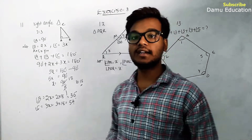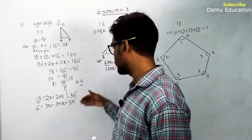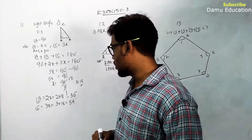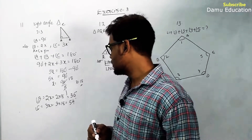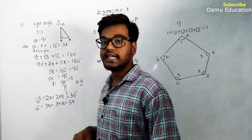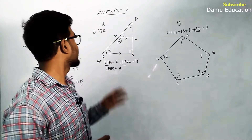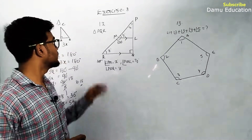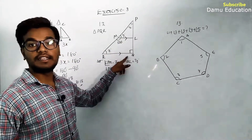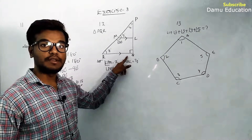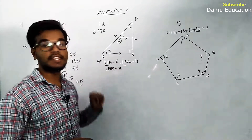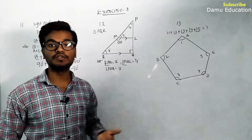Angle C equals 3x equals 3 into 18 equals 54 degrees. Adding 36 and 54 gives 90 degrees, plus the existing 90 degrees confirms the total. So the two acute angles of triangle ABC are 36 degrees and 54 degrees. Moving to the 12th question: triangle PQR is given with angle Q equal to 90 degrees.